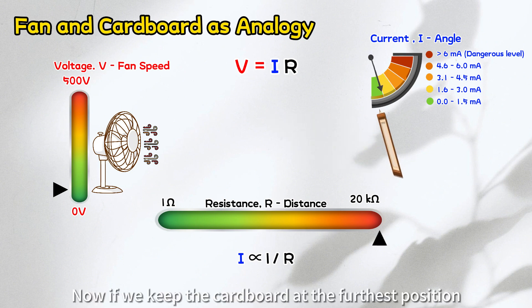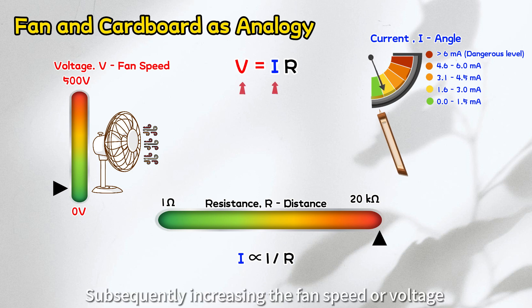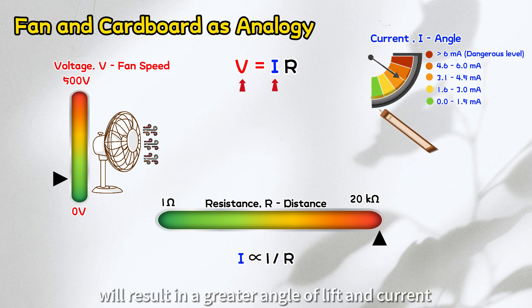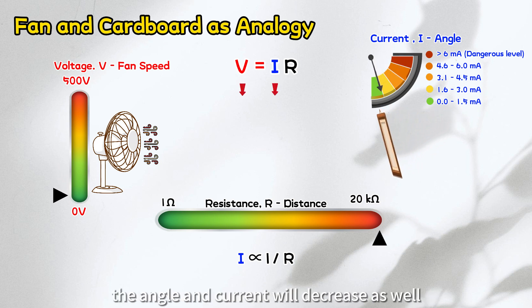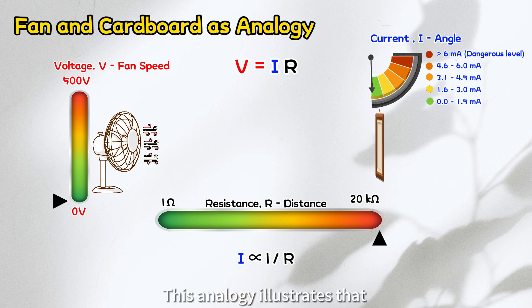Now, if we keep the cardboard at the furthest position, indicating that the resistance is fixed, subsequently, increasing the fan speed or voltage will result in a greater angle of lift and current. Conversely, when we lower down the fan speed, the angle and current will decrease as well. This analogy illustrates that with resistance unchanged, current varies proportionally with voltage.